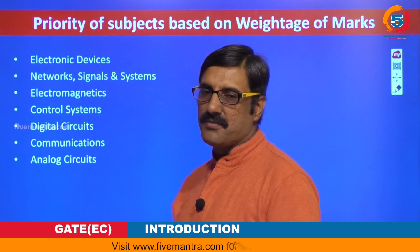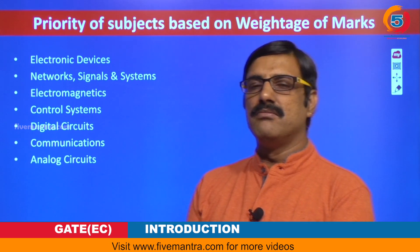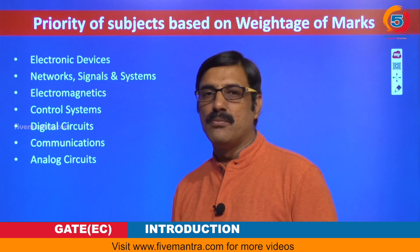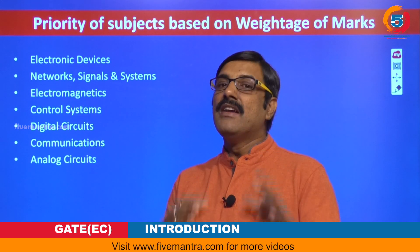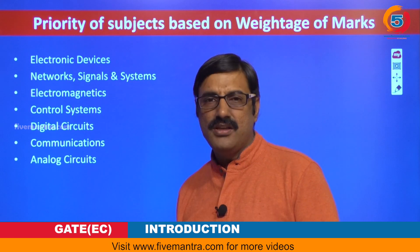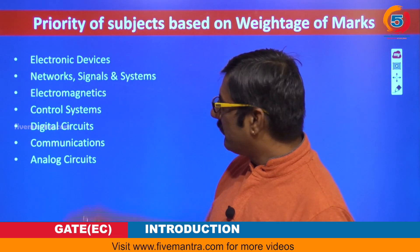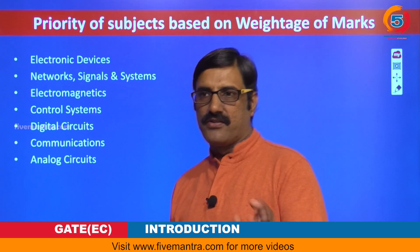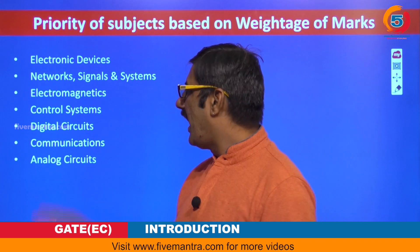For electromagnetics we can expect around 12 marks depending on which IIT sets the paper. IIT Kharagpur and IIT Kanpur generally focus more on electromagnetics, so when these two IITs set the paper, concentrate more on electromagnetics. Control systems is the fourth priority with a weightage of around 8 to 9 marks. The fifth priority is digital circuits — covering multiplexers, decoders, encoders, combinational circuits, and sequential circuits — also weighted around 8 to 9 marks.